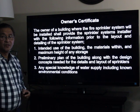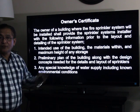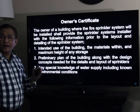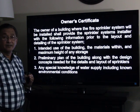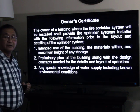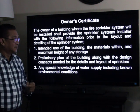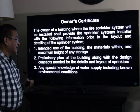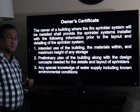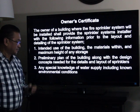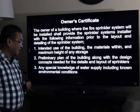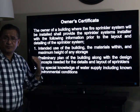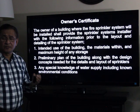Owner's certificate: before the design is started, the owner's certificate is always needed. The owner of the building where the fire sprinkler system will be installed shall provide the sprinkler system installer with the following information: number one, the intended use of the building, the materials within, and the maximum height of any storage; second, the preliminary plan of the building along with the design concepts; and third, any special knowledge of water supply including environmental conditions, such as exposure to corrosion or other special conditions.